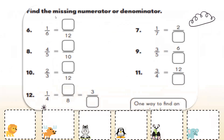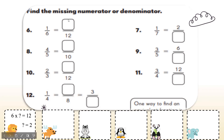Now the next section: find the missing numerator or denominator, but we're not given the factor. Here I have 1 over 6 is equal to something over 12. I have to ask myself, how did I change from 6 to 12 using multiplication? So 6 times what gives me 12? Recalling table 6: 6, 12 — so it's 6 times 2. If I multiplied the denominator by 2, I should multiply the 1 by 2 to find the numerator, which is 2.